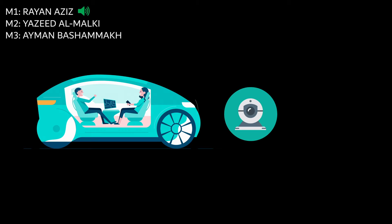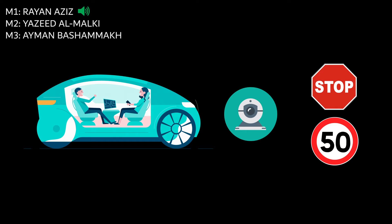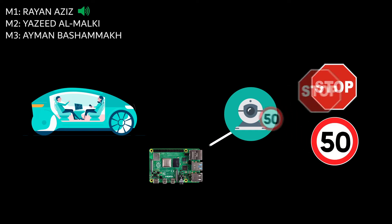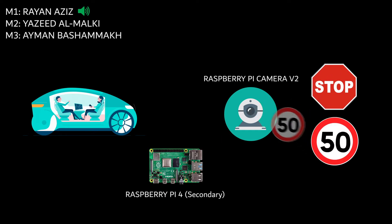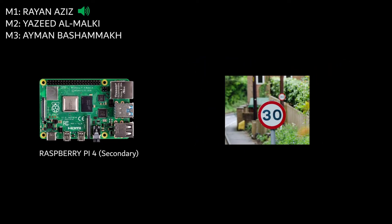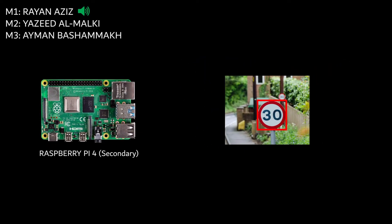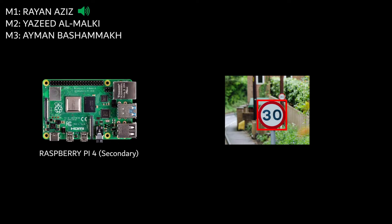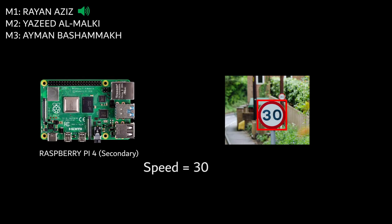First is the computer vision module, and it is responsible for reading stop and speed signs. It consists of a camera that captures frames in real time and feeds them to a single board computer, which is a Raspberry Pi 4 in our case. The Pi 4 will pre-process the frames before applying HOG SVM machine learning algorithms using our custom trained models to determine the traffic sign type.